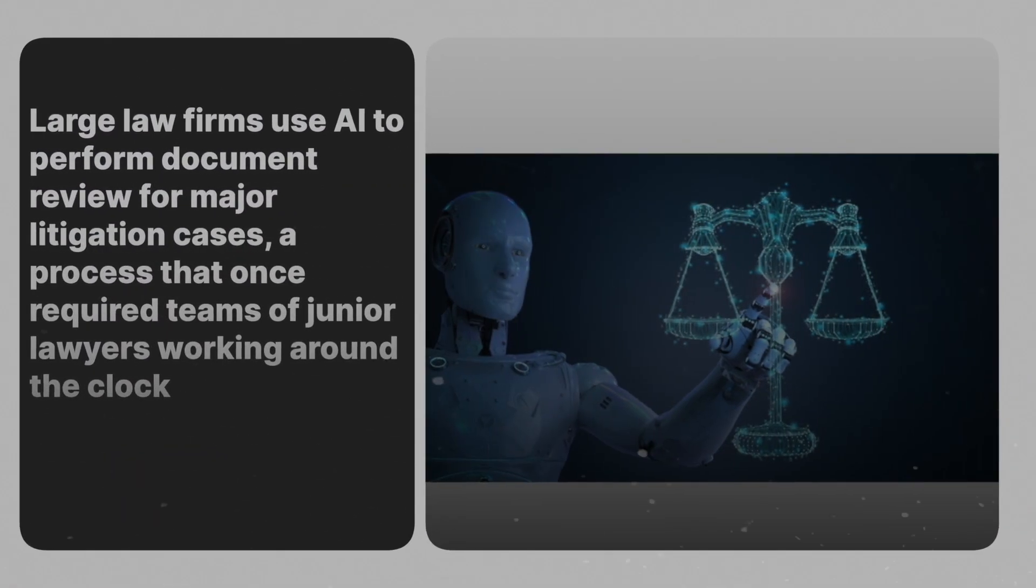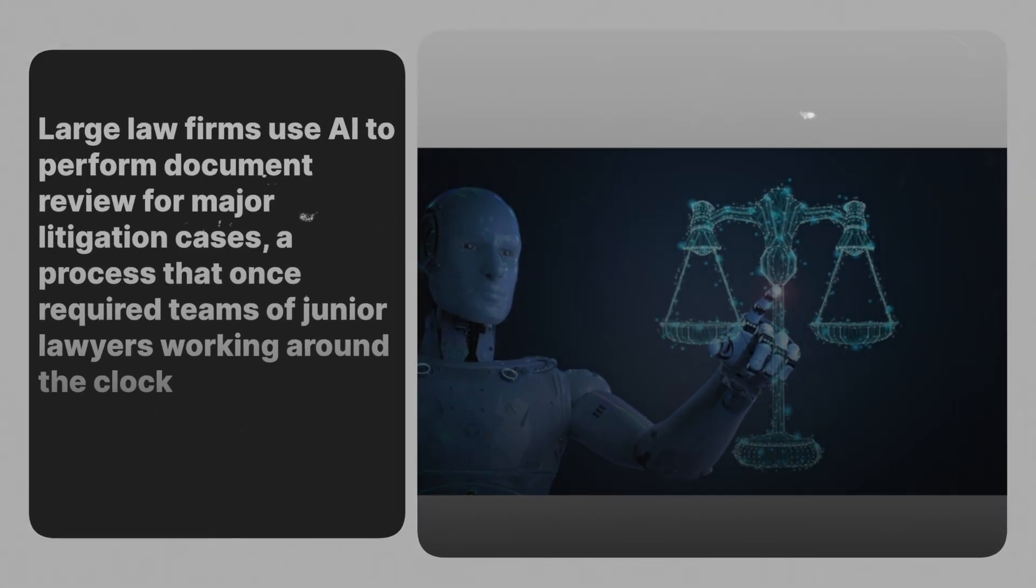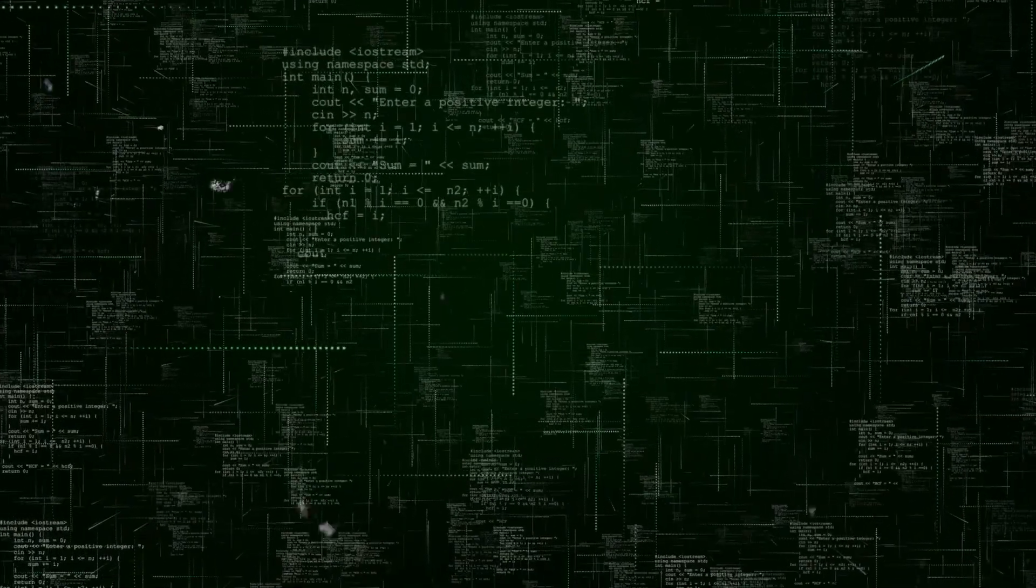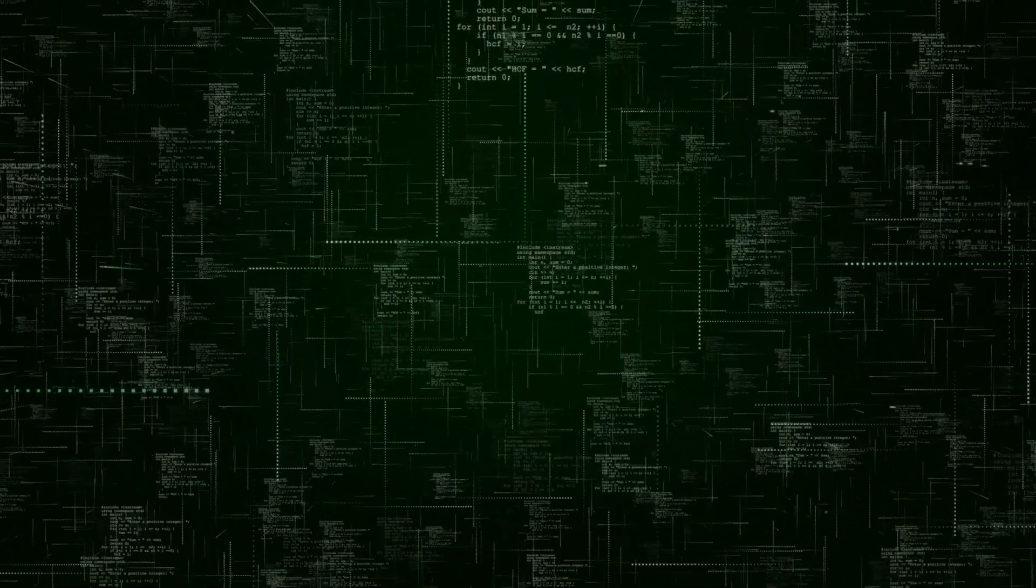Large law firms use AI to perform document review for major litigation cases, a process that once required teams of junior lawyers working around the clock. AI systems can analyze thousands of legal documents, identify relevant precedents, and flag potential issues faster and more accurately than human lawyers.